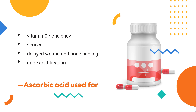What is ascorbic acid used for? It is used to treat vitamin C deficiency, scurvy, delayed wound and bone healing, urine acidification, and in general as an antioxidant. It has also been suggested to be an effective antiviral agent.